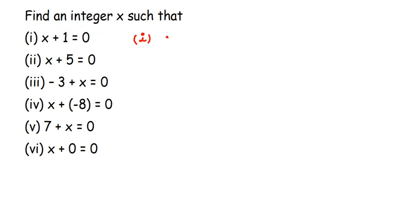The first equation is x plus 1 is equal to 0. There are two ways of solving it: the transpose method and the balancing method. The balancing method is where you perform the operation on both sides of the equation. I'm going to use the transpose method, where you shift a number from one side of the equation to the other side, and its sign changes.